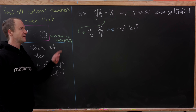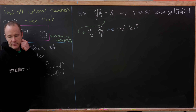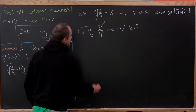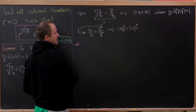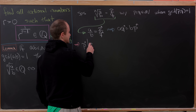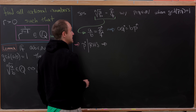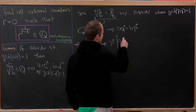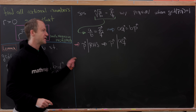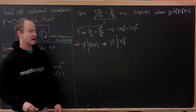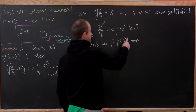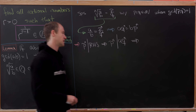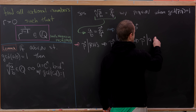Now we can make an argument using p and q being relatively prime, with gcd equal to 1. p to the n divides the right-hand side, so p to the n divides the left-hand side — in other words, p to the n divides a times q to the n. Since p and q are relatively prime, p to the n must divide the other term, so p to the n divides a.